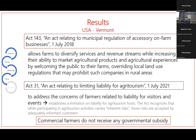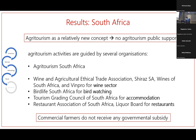For the South African case, agritourism is a relatively new concept and there are no agritourism public support schemes. However, there are private organizations guiding and driving these activities, including Agri-Tourism Africa, and sector-specific bodies such as the Wine and Agriculture Ethical Trade Association, Shiraz South Africa, Wines of South Africa, and Bird Life South Africa for bird-watching activities. The country is witnessing a kind of flourishing momentum, but commercial farmers cannot receive any governmental subsidy.